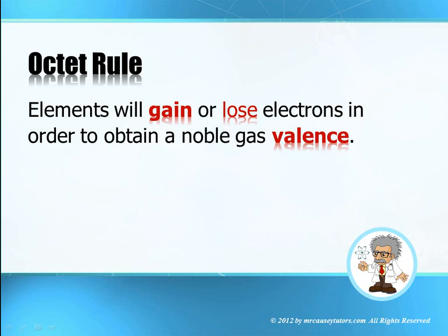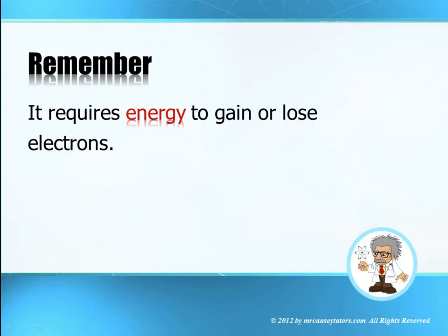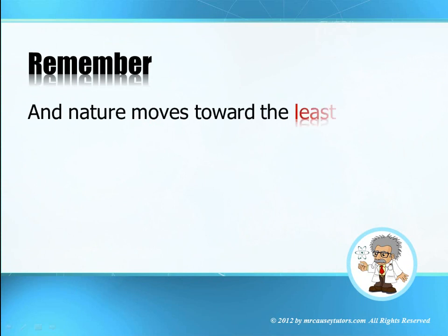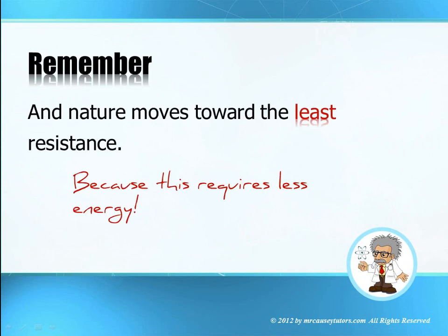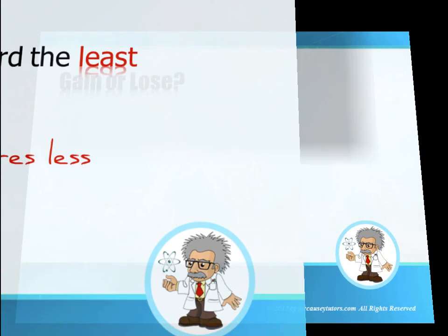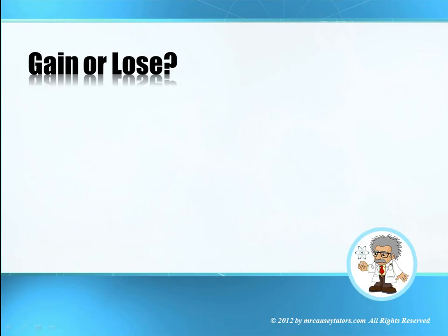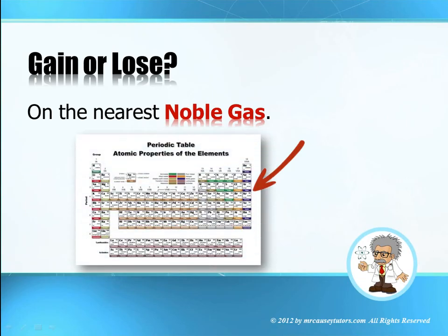You might be asking yourself, how do I know whether an element gains or loses? That's what we're going to talk about in this lesson. Remember, it requires energy to gain or lose electrons, and nature moves towards the least resistance because this requires less energy — nature goes the easiest route. How we determine whether it gains or loses depends on the nearest noble gas. They want to have a noble gas configuration, so it's either going to gain electrons and move up, or lose electrons to drop down to the nearest noble gas.